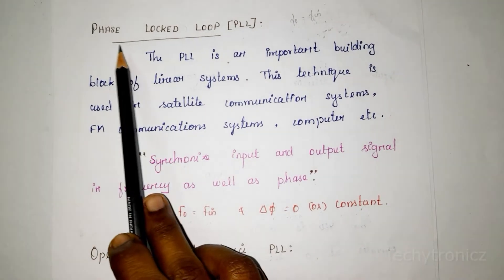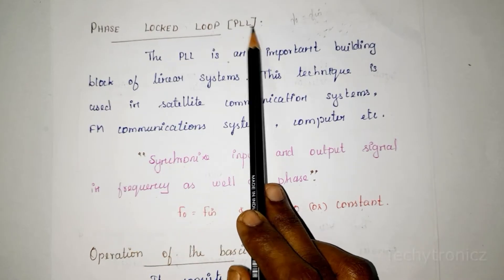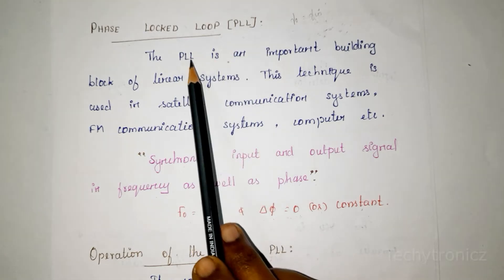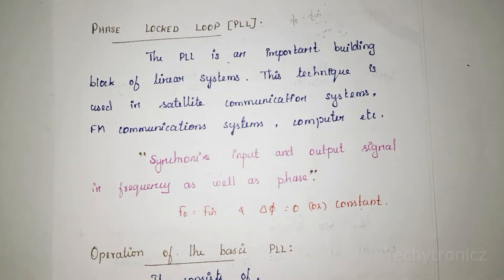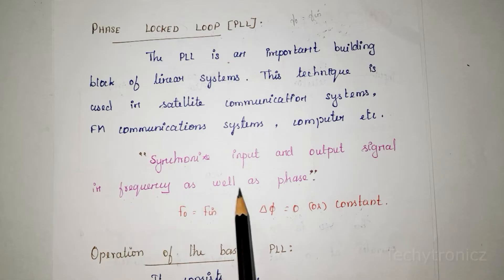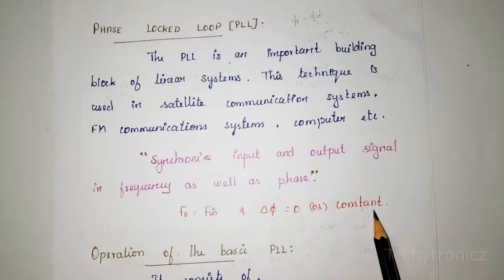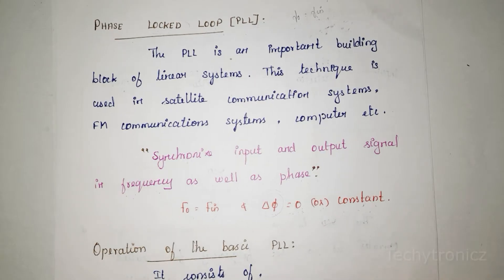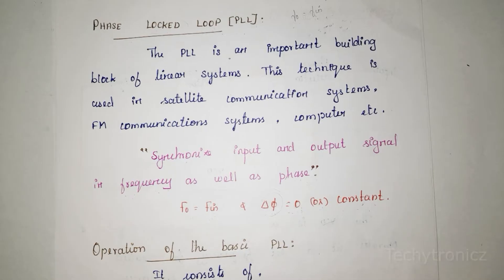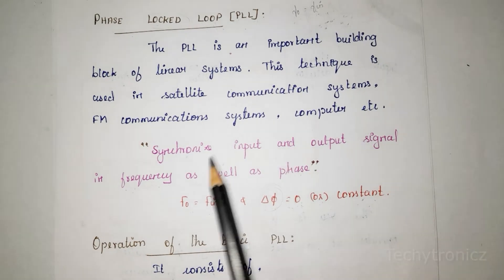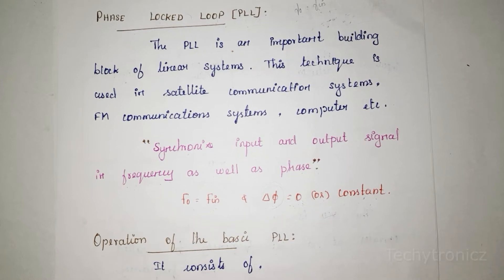In this video we are going to learn about Phase Lock Loop (PLL). PLL synchronizes the output signal with the input signal in phase as well as frequency — meaning the output frequency F0 equals the input frequency, and the phase difference between input and output is zero or constant. PLL is used in many applications such as satellite communication, radar, FM communication systems, and as a clock multiplier in microprocessors.